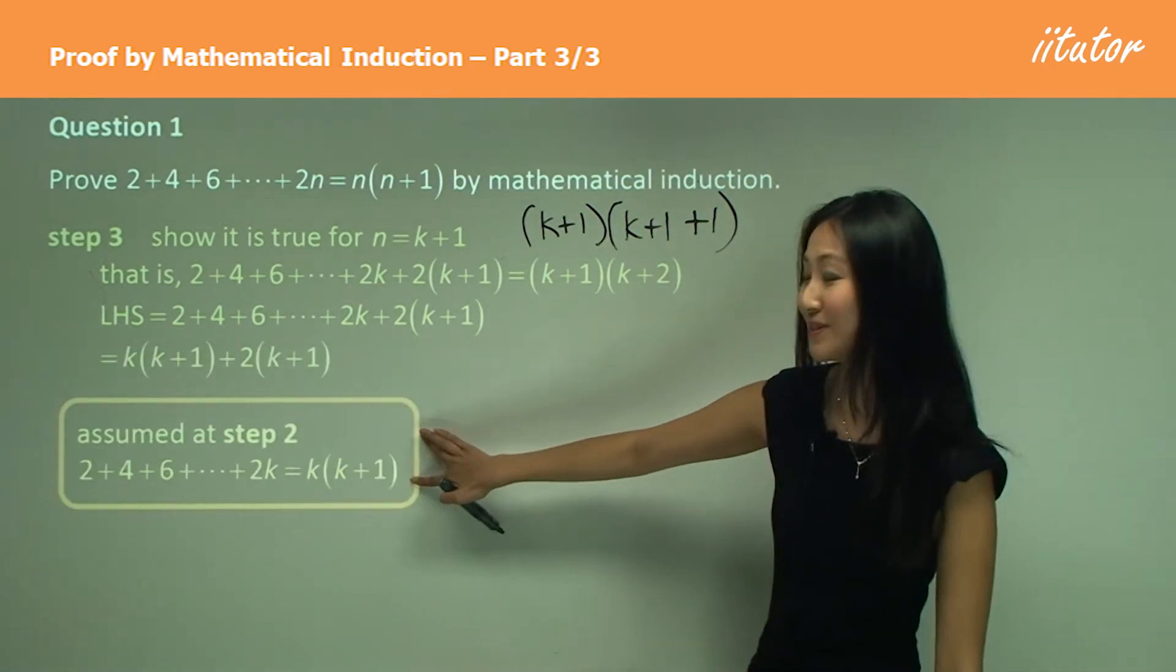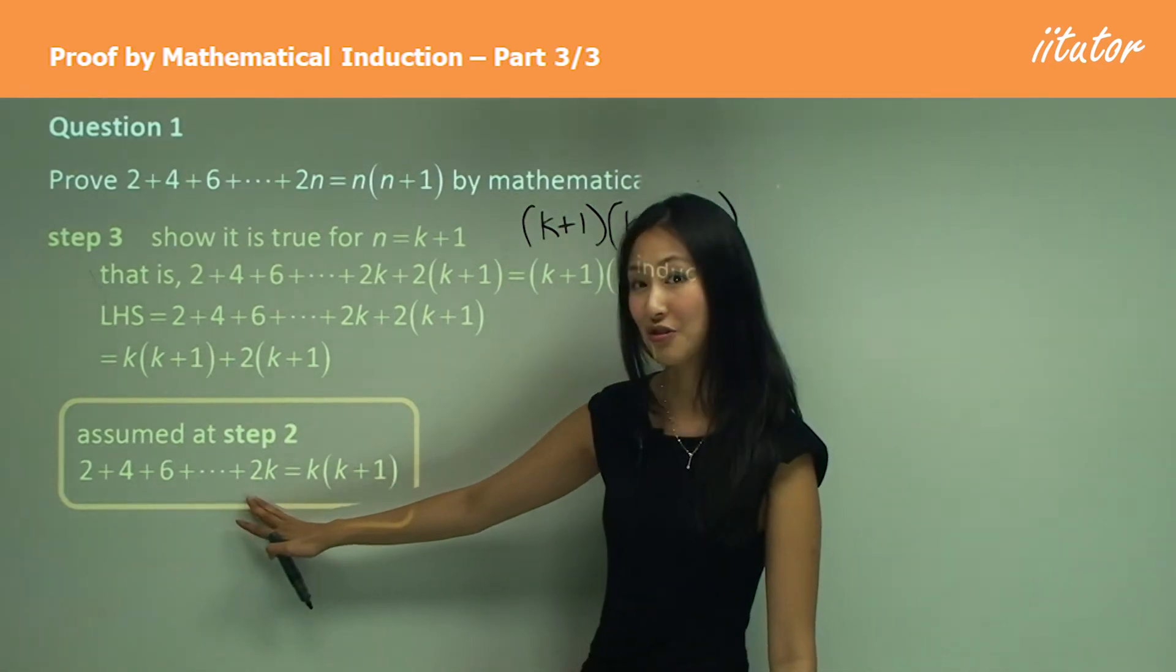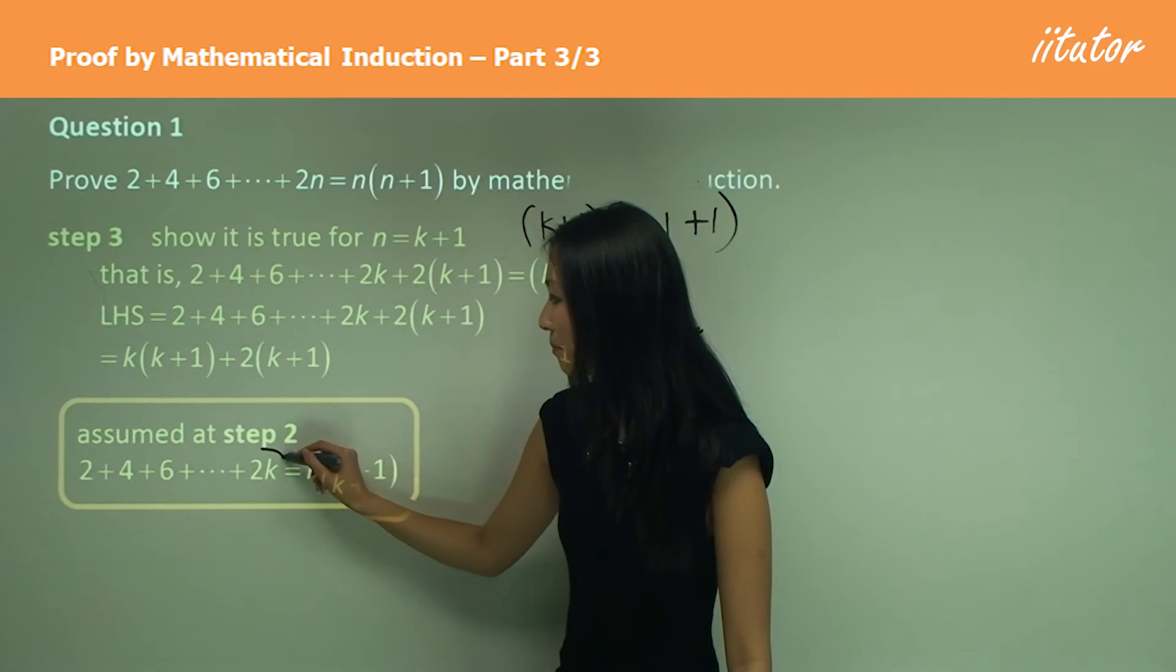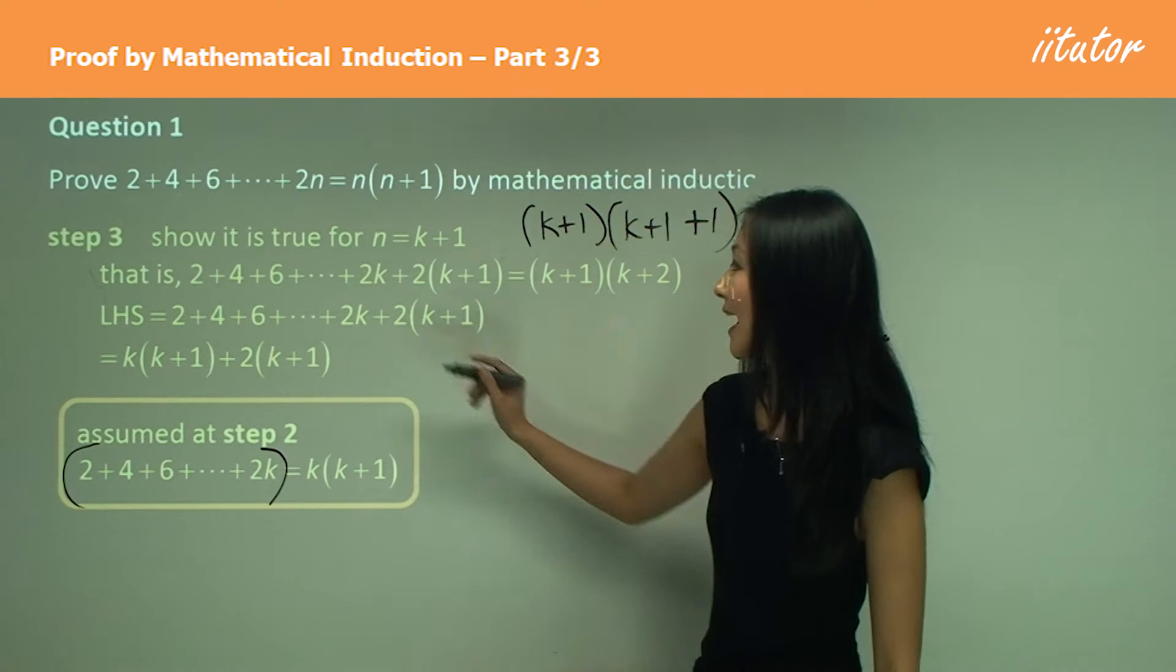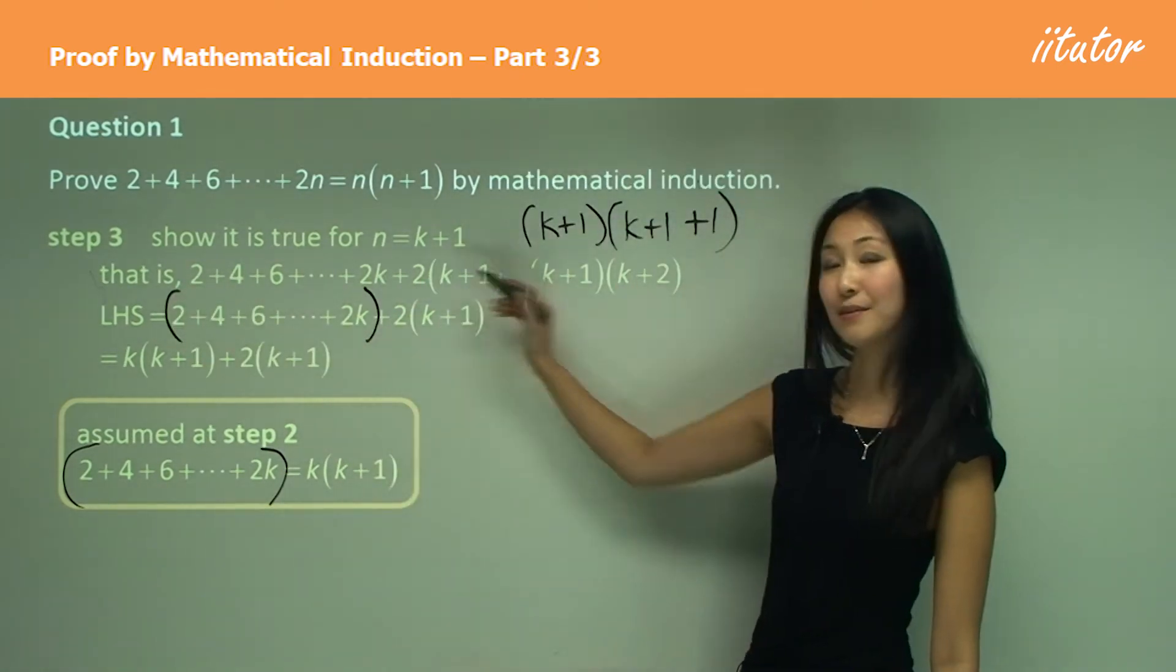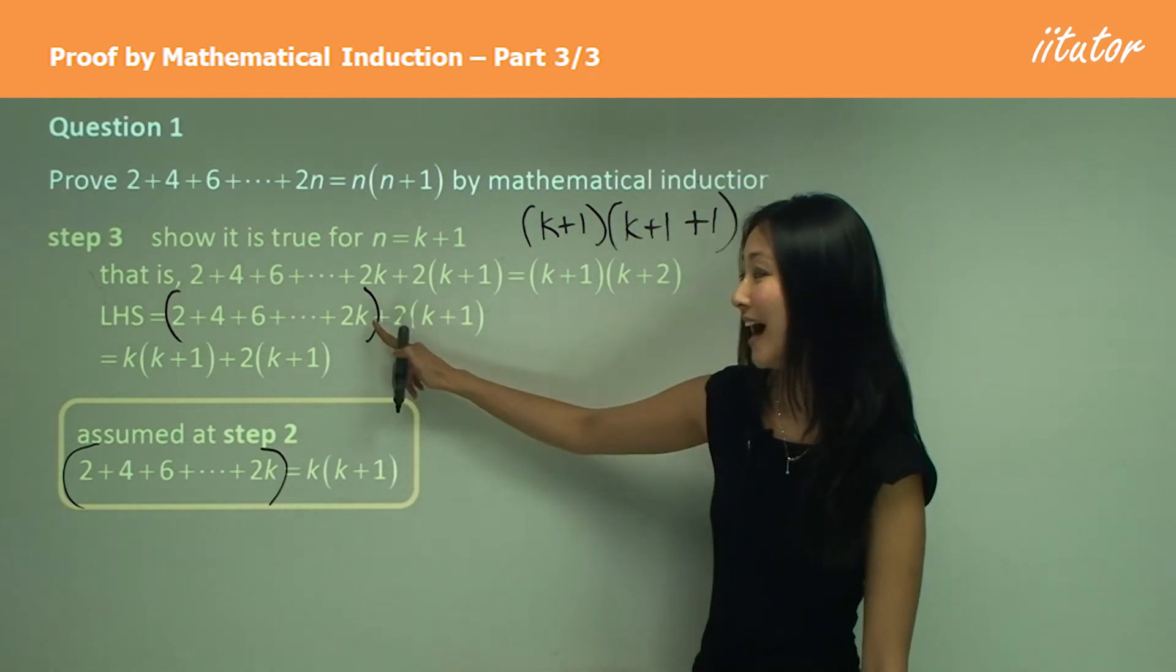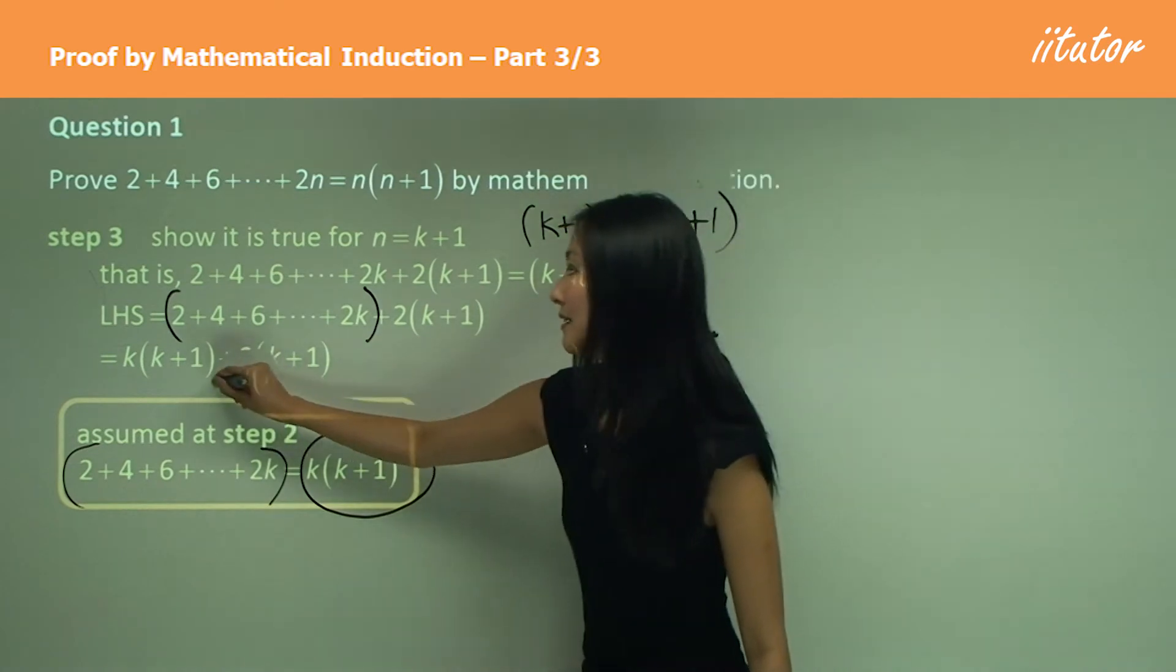Well, looking at what's assumed in step 2, 2 plus 4 plus 6 plus 2k equals to k times k plus 1. Can you see how this part of the assumption looks exactly the same as this part of the proof we're trying to make? This is exactly the same as that, right? Which means that instead of writing that, I can just substitute this into here.